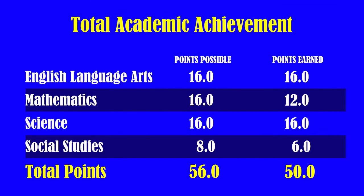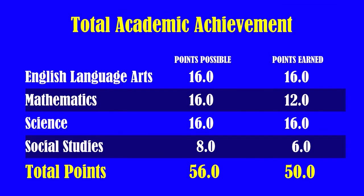For total academic achievement, we will get one score for each academic area for our district. Our English Language Arts scores are based on our grade level assessment for grades 3 through 8, our English 1 end of course, our English 2 end of course, and our grade level Map A assessments. We scored 16 out of 16 points for English Language Arts.